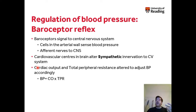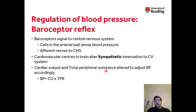It's also worth bearing in mind that the heart has sympathetic innervation. If the heart is stimulated by sympathetic nerves, it increases heart rate and force of contraction. Changes in cardiac output or total peripheral resistance, as mediated by the sympathetic nervous system, can adjust blood pressure accordingly — because blood pressure is a function of cardiac output and total peripheral resistance.